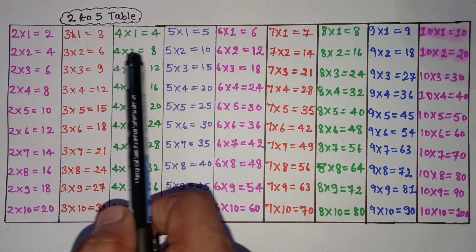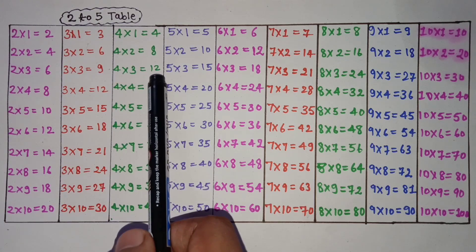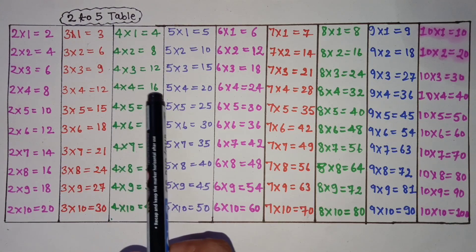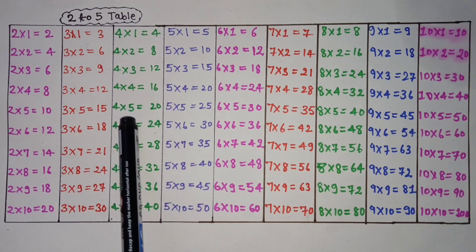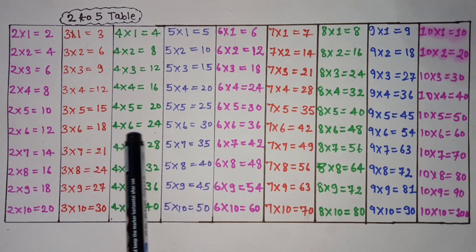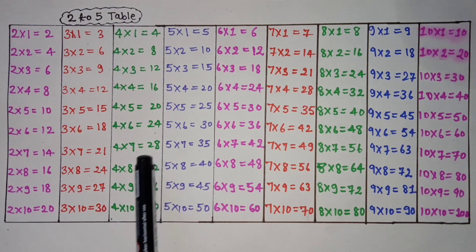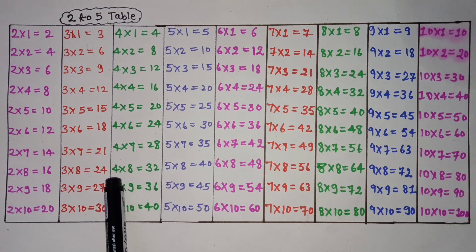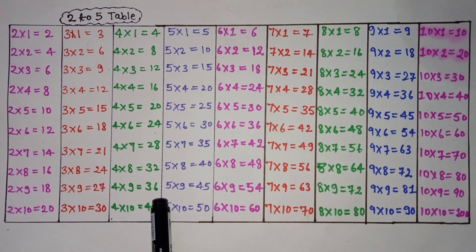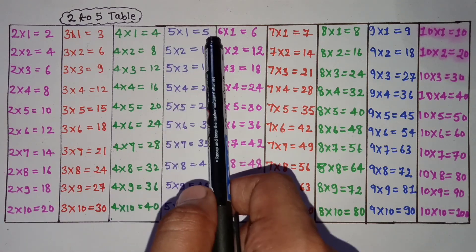4×1 is 4, 4×2 is 8, 4×3 is 12, 4×4 is 16, 4×5 is 20, 4×6 is 24, 4×7 is 28, 4×8 is 32, 4×9 is 36, 4×10 is 40.